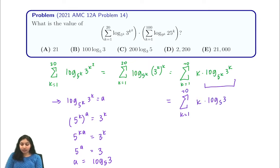From here we can pull our constant out of our summation, and then all we have to do is evaluate the sum from 1 to 20. So that's just n times n plus 1 over 2, where n is 20. So that's 20 times 21 over 2, and this is equal to 210 log base 5 of 3.